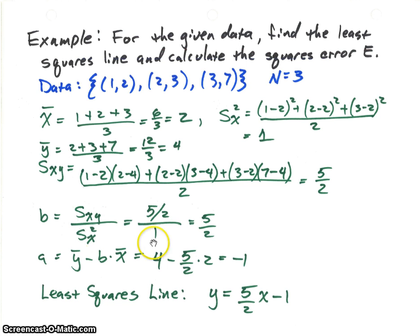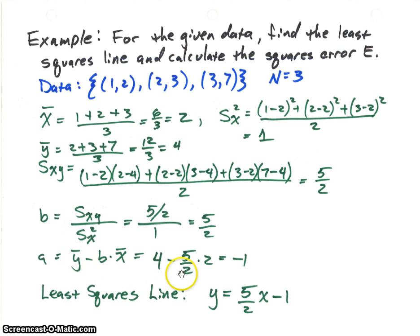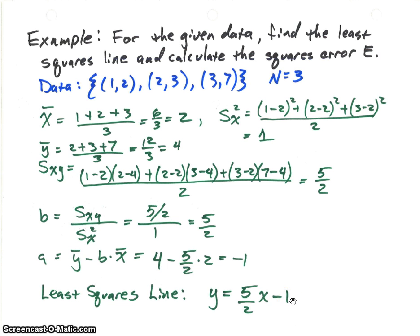For the y-intercept a, we use the mean of y, the b value just calculated, and the mean of x. Plugging those values in, we get a equals minus 1. So the least squares line for this data is y equals 5/2 x minus 1 — the line that minimizes the squared error.